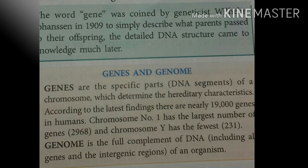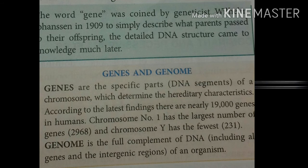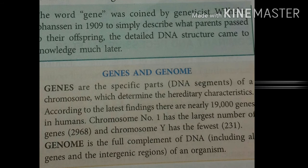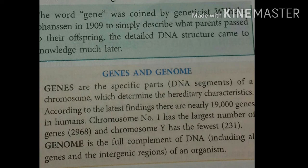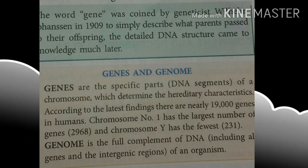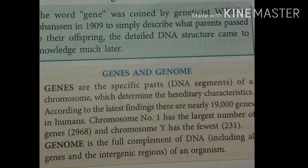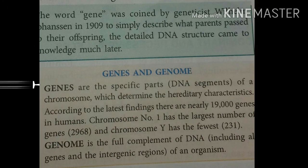Now I am talking about gene and genome. Genes are specific segments of DNA on a chromosome which determine the hereditary characters. According to the latest findings, there are nearly 19,000 genes in humans. Chromosome number one has the largest number of genes — 2,968 — and chromosome Y has the fewest — 231. Genome is the full complement of DNA, including all genes and the intergenic regions of an organism.